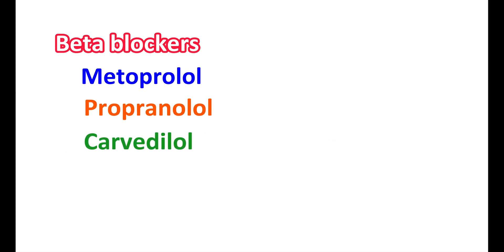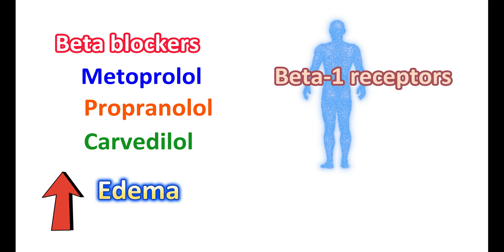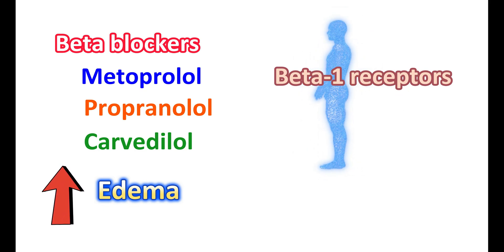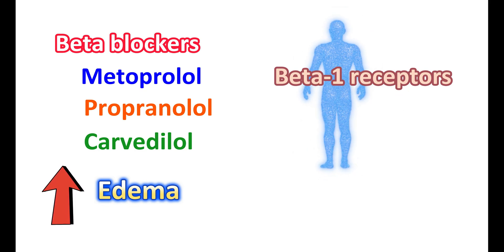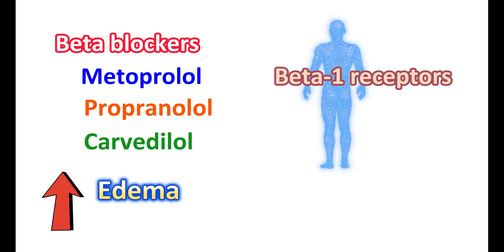Beta blockers like metoprolol, propranolol, and carvedilol can also increase fluid retention when used for chronic periods. Beta blockers block the beta-1 receptors on the heart, thereby reducing the cardiac force of contraction as well as the rate of contraction. This reduces overall circulation. On long-term use, beta blockers can increase edema and fluid retention, particularly in the lower extremities. The swelling produced by beta blockers is dose-dependent, with higher doses carrying an increased risk of leg swelling.